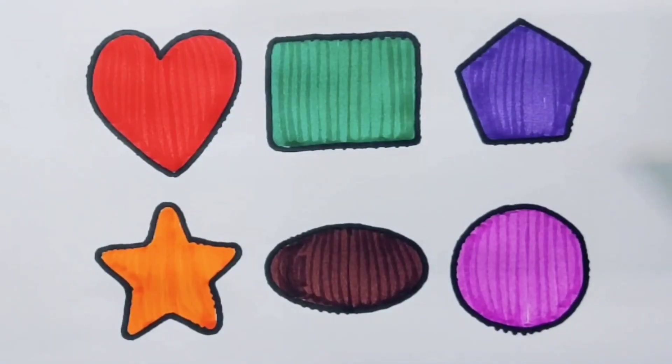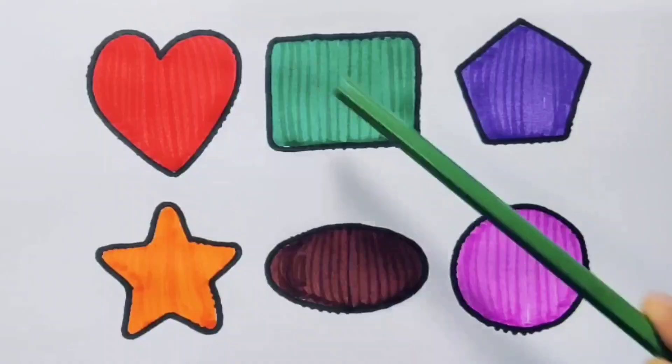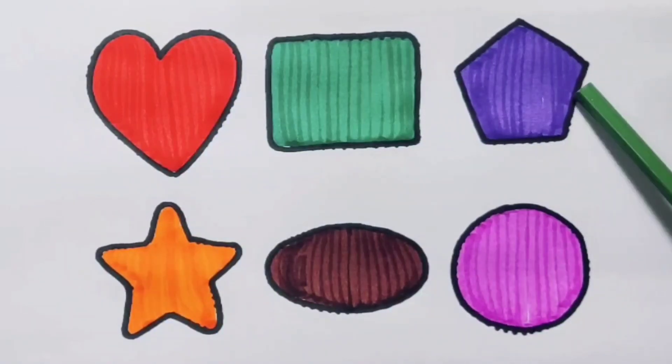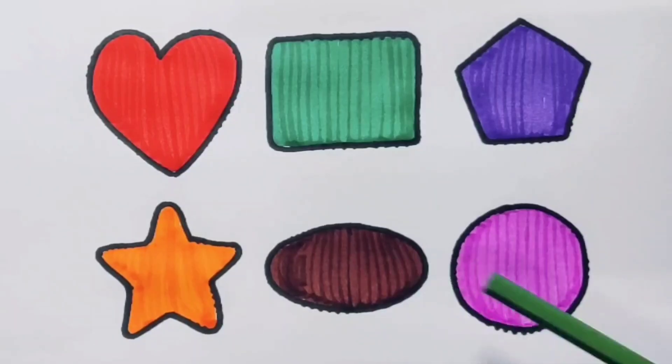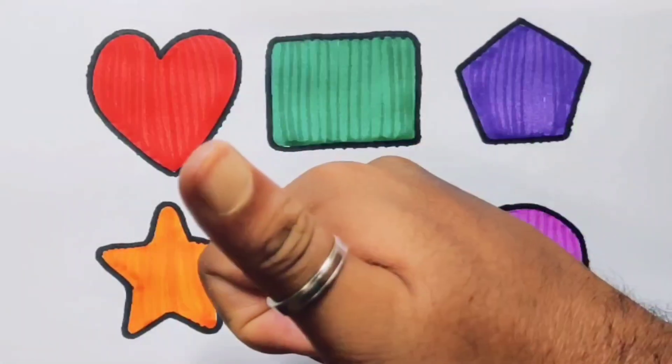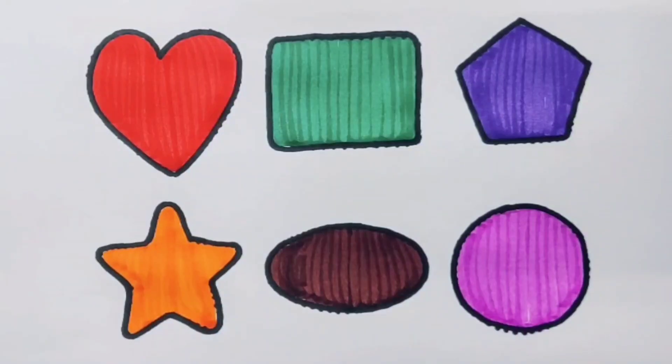What we learned: red heart, green rectangle, purple pentagon, orange star, chocolate oval, and pink circle. Thank you for watching my video. If you like it, please subscribe. Bye!